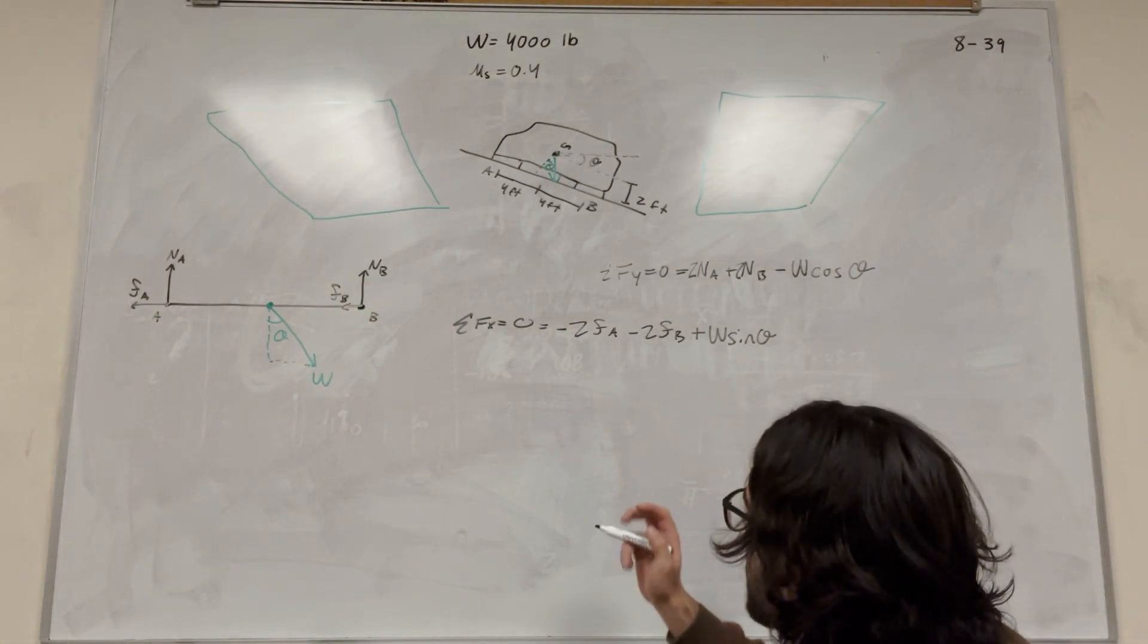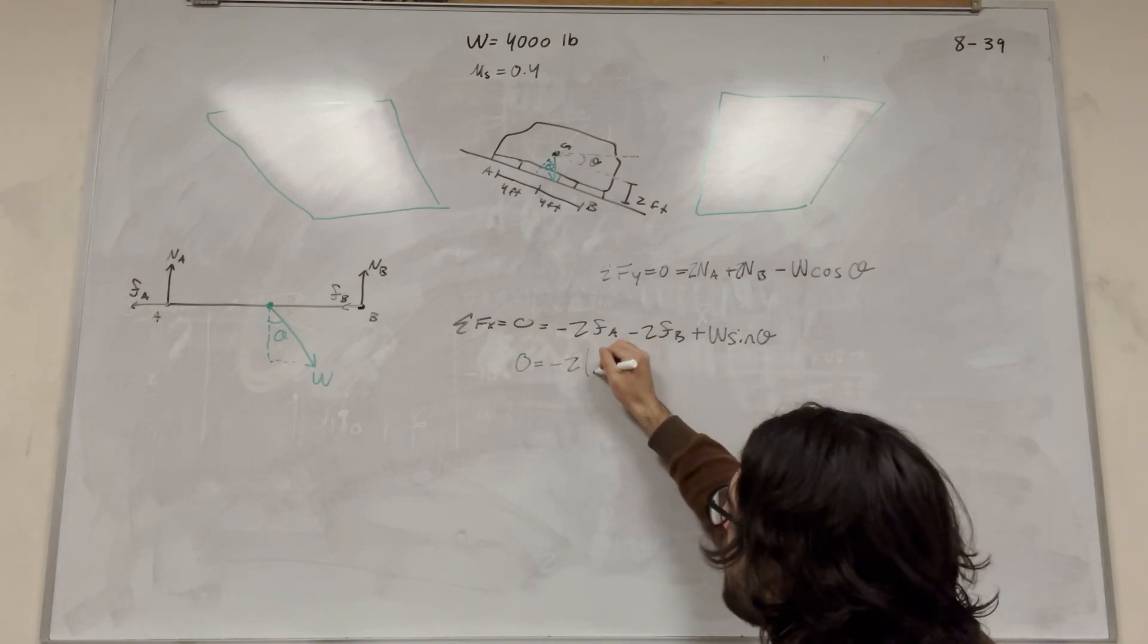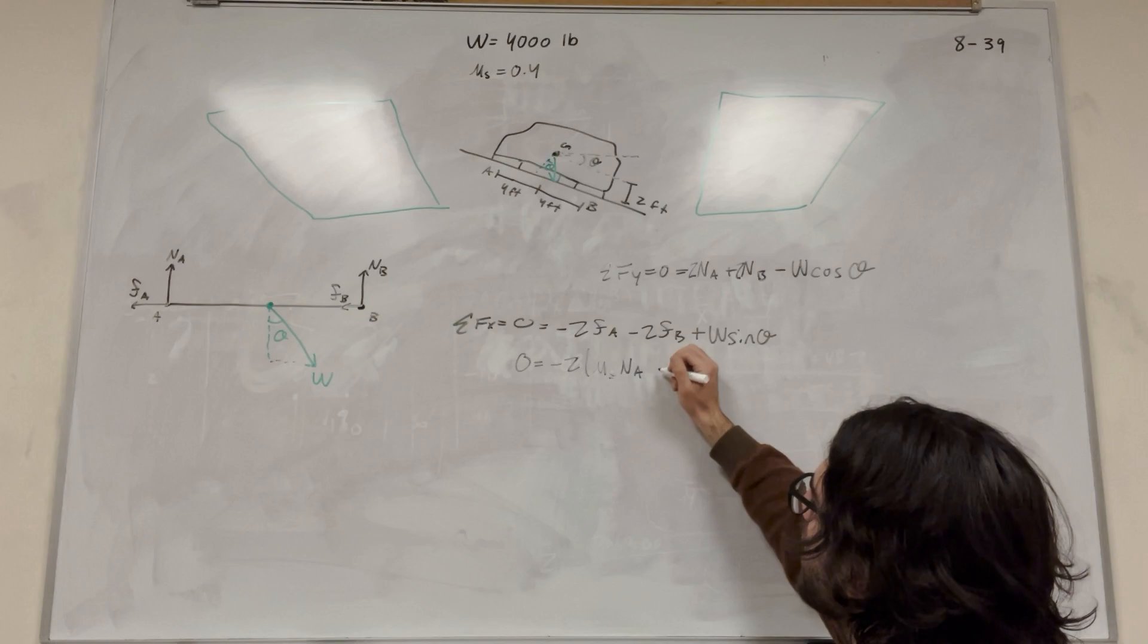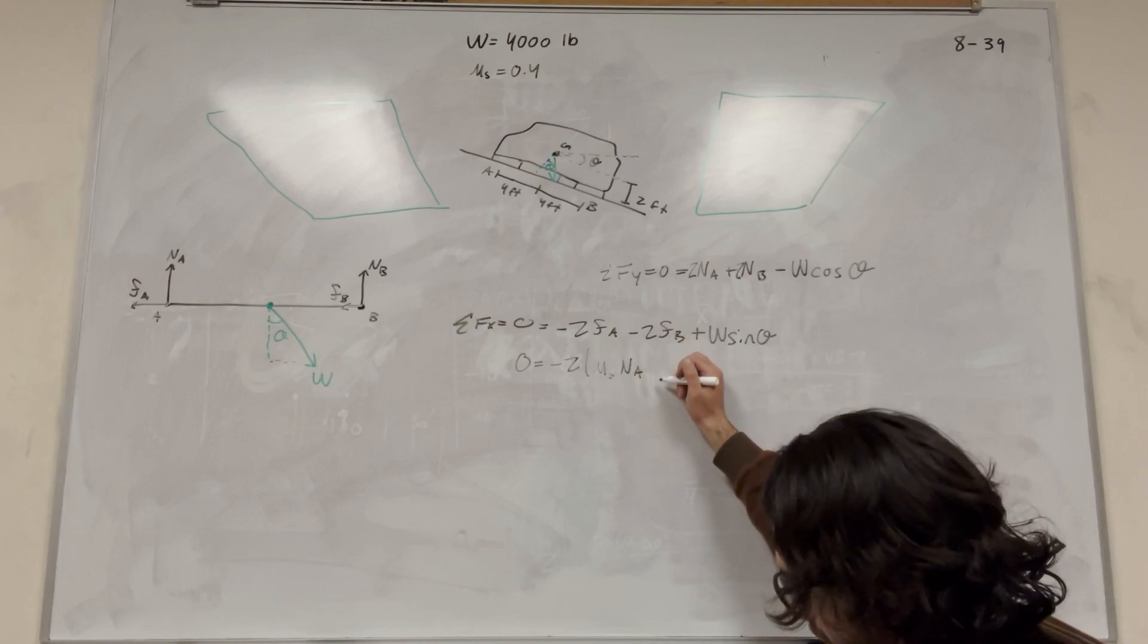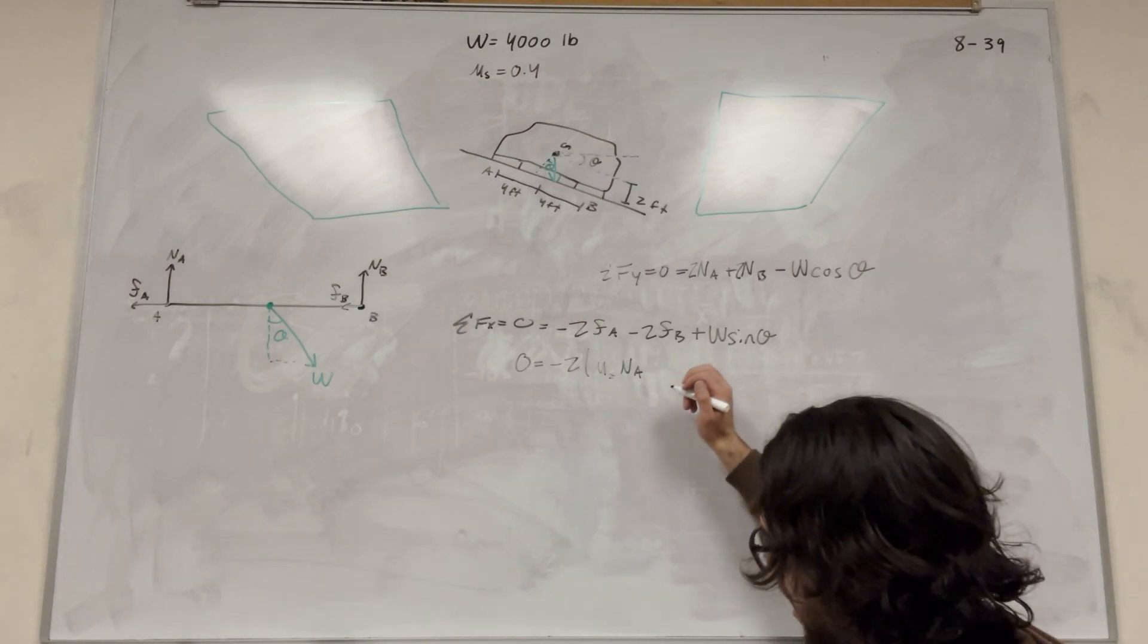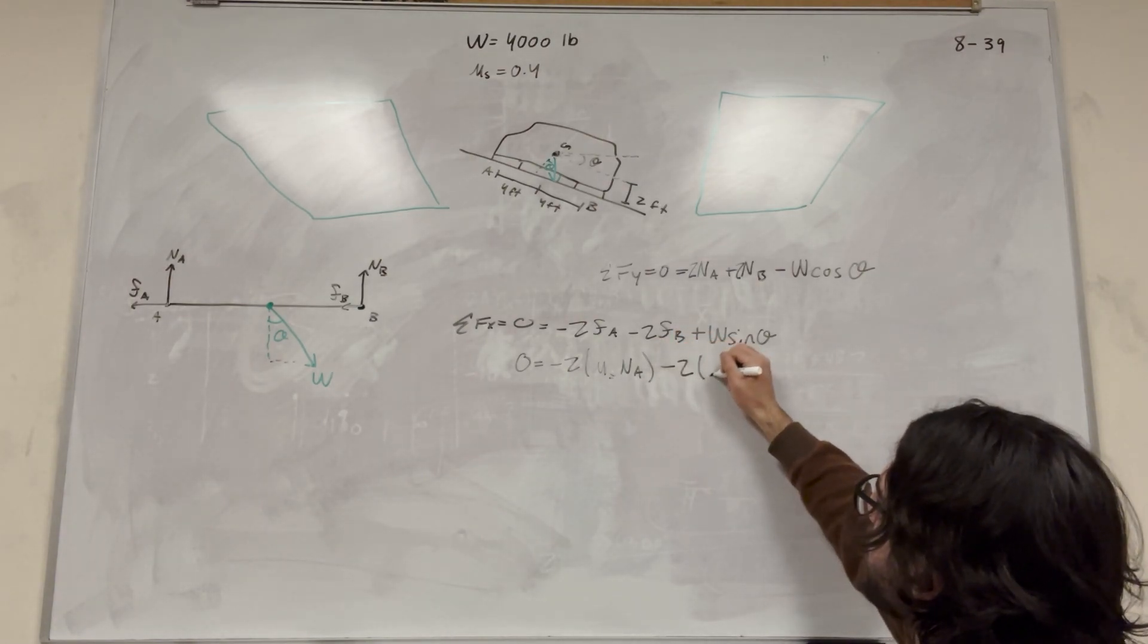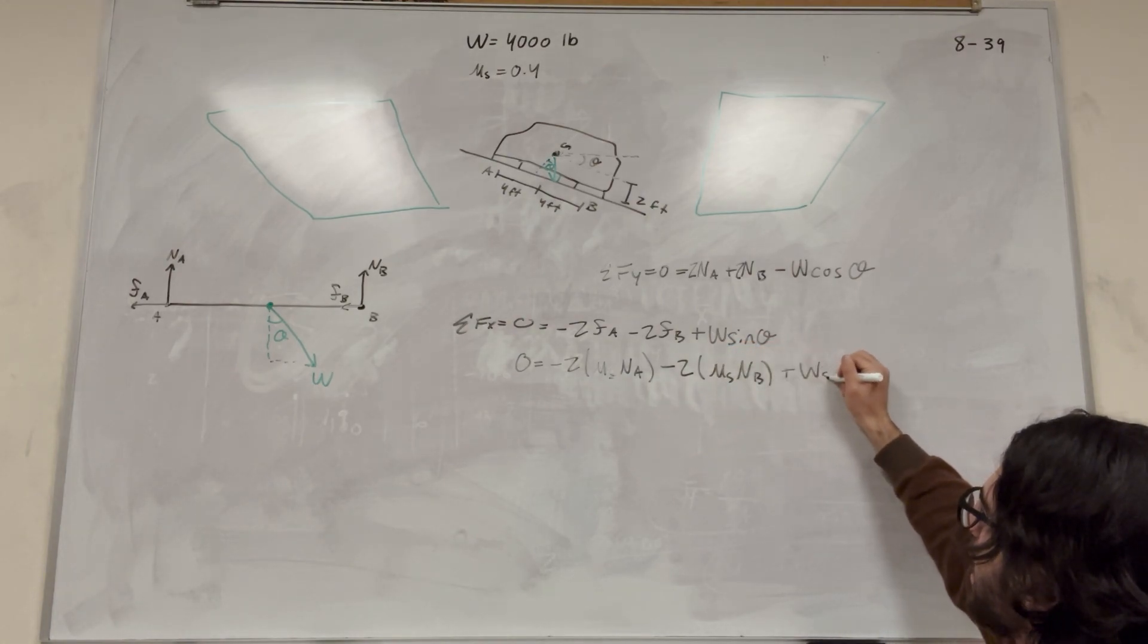So let's expand this equation now. Zero is equal to negative two. So friction at A is coefficient of static friction times normal at A. And then this negative two can also be brought out. So then it'll be minus two coefficient of static friction normal at B, plus W sine theta.